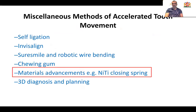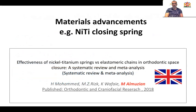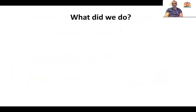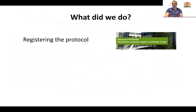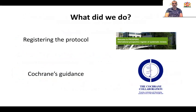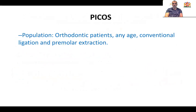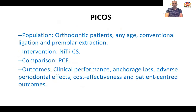What about material advancement such as nickel-titanium springs in space closure? We undertook a systematic review published in the Orthodontic and Craniofacial Journal. We registered our systematic review with PROSPERO and followed Cochrane guidelines. Our PICO involved orthodontic patients of any age treated with conventional fixed appliance, who had premolar extractions and needed space closure — either by nickel-titanium spring or power chain elastic. Outcomes included clinical performance, anchorage loss, adverse periodontal damage, cost-effectiveness, and others. We included only randomized controlled trials.